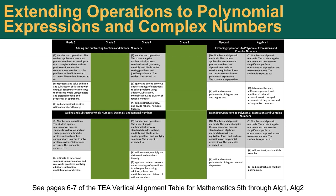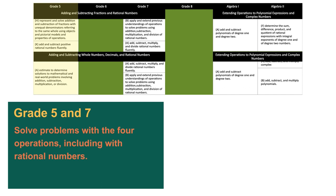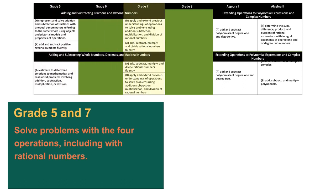Let's take a look at the vertical alignment for 10a in extending operations to polynomial expressions and complex numbers to see the progression of skills starting in 5th grade. In 5th grade, students applied their knowledge to the four basic operations to solve problems. In 7th grade, that expanded to solving problems including the full range of rational numbers, both positive and negative.